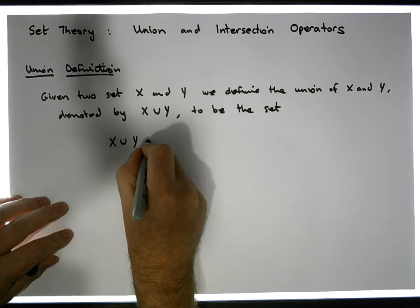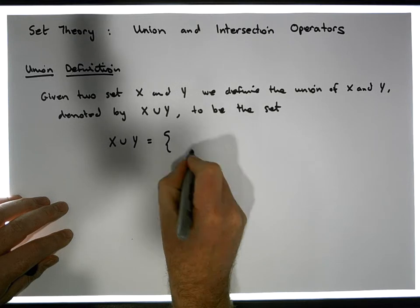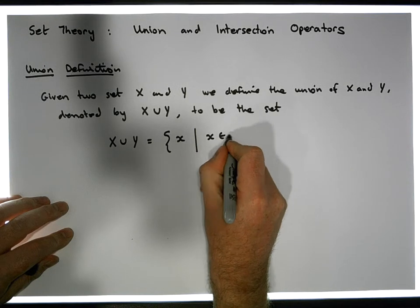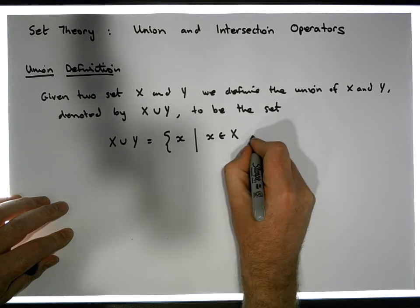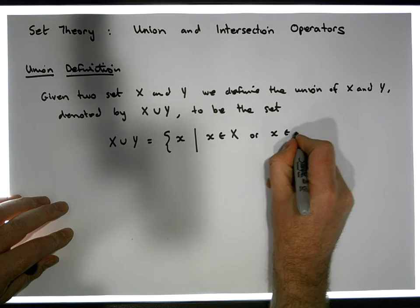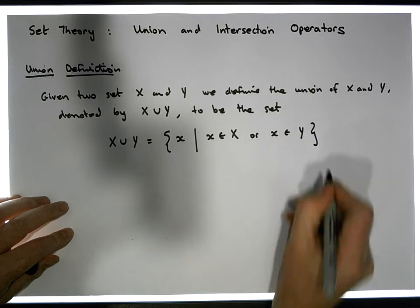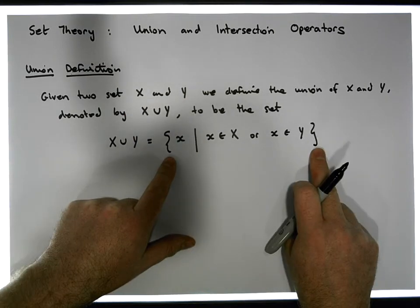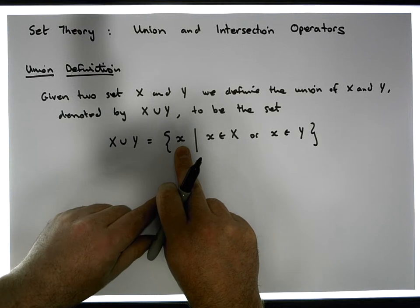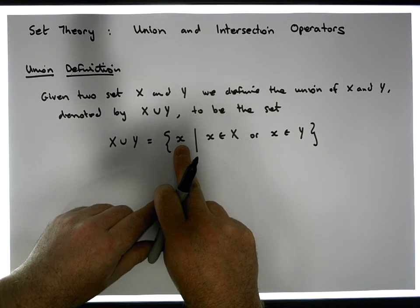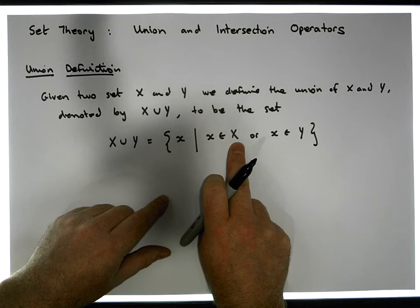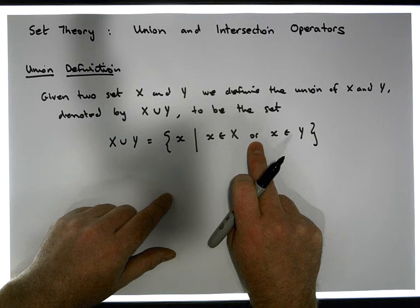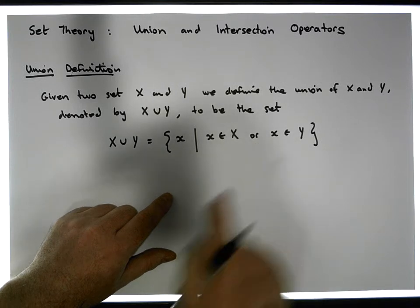x union y is equal to, in set builder notation, the set of members such that x is an element of x, or x is an element of y. So what we're saying is that the union is a new set, and the elements in that set are values taken from x or values taken from y — and by 'or' we also mean values that are in both x and y simultaneously.